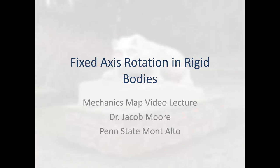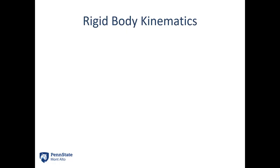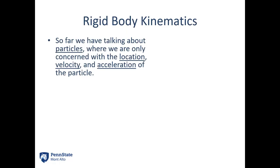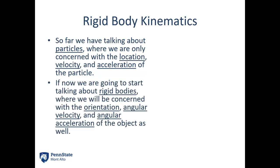Hello. For today's video lecture, we're going to be dealing with fixed axis rotation in rigid bodies. So, rigid body kinematics — we're starting in this new section. So far we've been talking about particles where we are only concerned with the location, velocity, and acceleration of that particle. If we are now going to start talking about rigid bodies, we're going to be concerned with orientation, angular velocity, and angular acceleration of the object as well. These are going to add to what we deal with for particles.